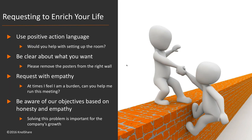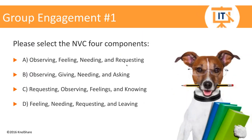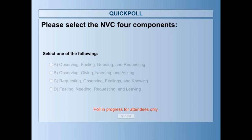Now I've covered the four components of NVC — let's check in with our first group engagement. Please select the NVC four components. Is it A: observing, feeling, needing, and requesting? B: observing, giving, needing, and asking? C: requesting, observing, feelings, and knowing? Or D: feeling, needing, requesting, and leaving? Let's see what the poll results show.